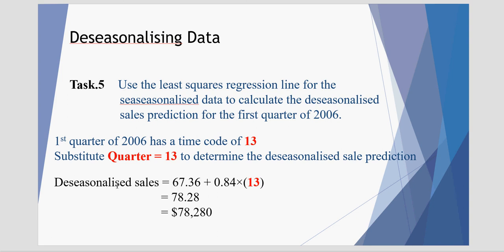By substituting that into our new linear regression, we find that deseasonalized sales equals 67.36 plus 0.84 times the time code for the quarters of 13, gives us a value of 78.28. Remembering, this is actually $78,280.